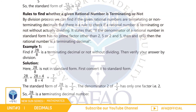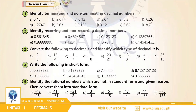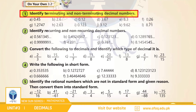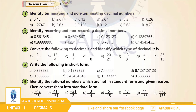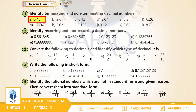ان concepts کو سمجھنے کے لیے exercise سے کچھ سوال حل کرتے ہیں، page 47, question number 1: Identify terminating and non-terminating decimal numbers. (a) 0.45 — part a میں 0.45 ہمارے پاس terminating decimal number ہے۔ اسی طرح سے اگلے parts آپ نے خود حل کرنے ہیں۔